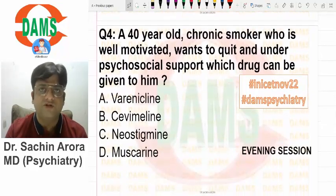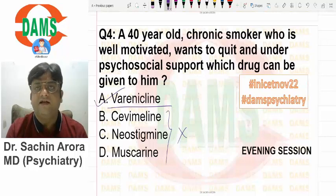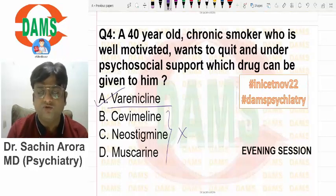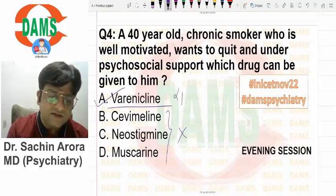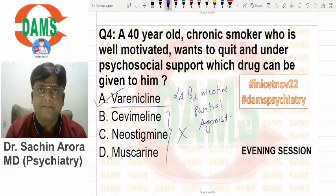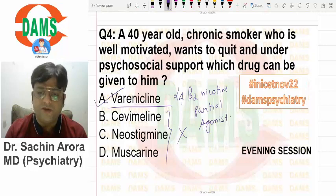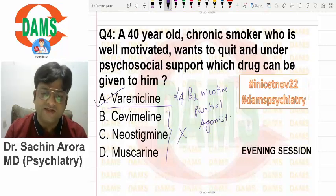This was a doable repeat question. Most students marked it correct. Varenicline was a straightforward answer for smoking cessation. The two main drugs used in smoking cessation are varenicline — an alpha-4 beta-2 nicotine partial agonist — and bupropion. Varenicline is the single best answer. Repeat question, doable, very much about smoking cessation.